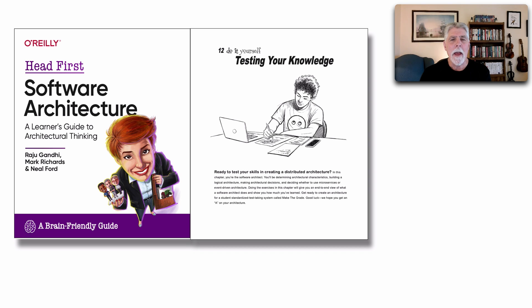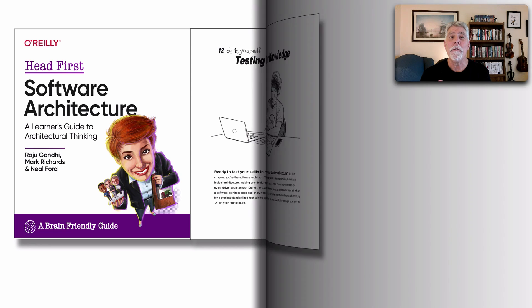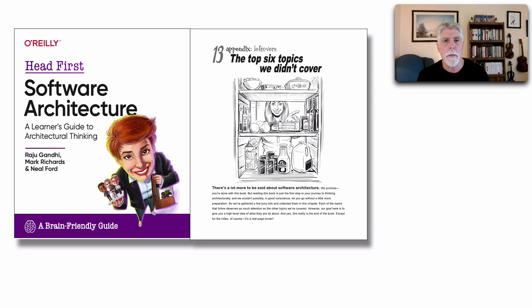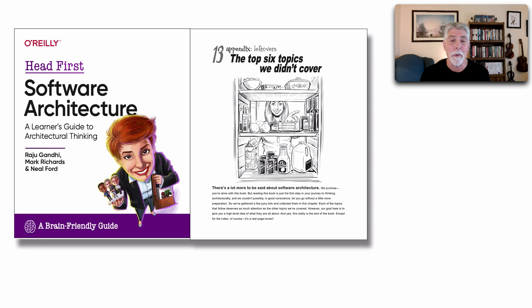Every Head First book finishes with a final chapter called the leftovers. These were six topics that we didn't have a chance to dedicate an entire chapter to — things like, for example, the soft skills of architecture. We did focus a lot on those soft skills in the top six topics we didn't cover elsewhere in the book.